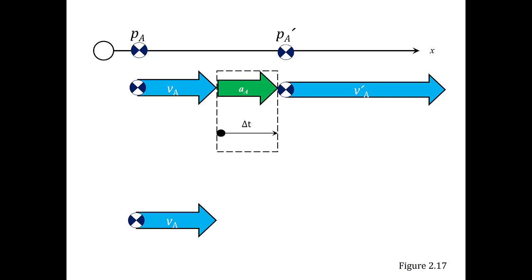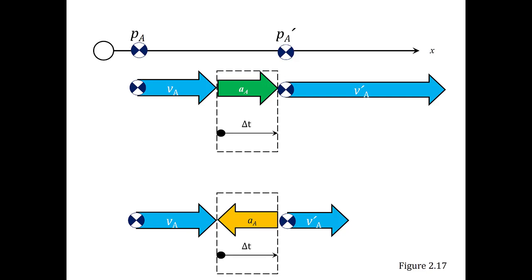Conversely, if at another point in time I have a smaller velocity, my velocity has changed and I need a period of time over which an acceleration is being applied. If I am decreasing my velocity, my acceleration has to be opposite the direction of travel. Think of it this way: speeding up means hitting the gas — acceleration in the direction of travel. Slowing down means hitting the brakes — a deceleration, or an acceleration vector pointing opposite to the direction of travel.